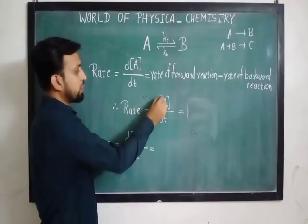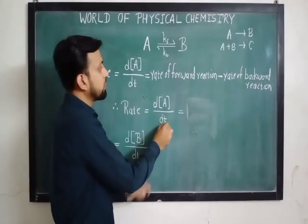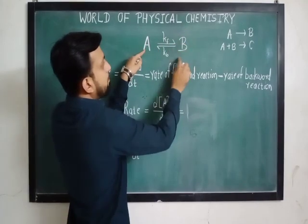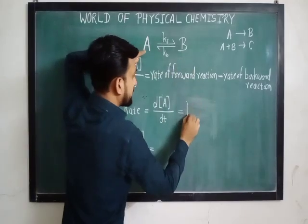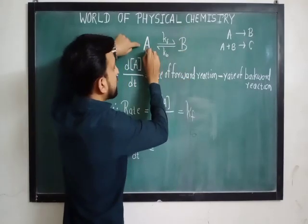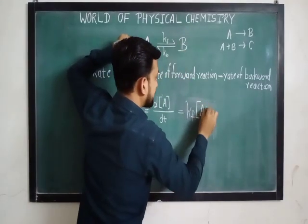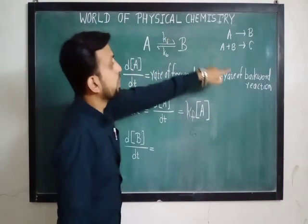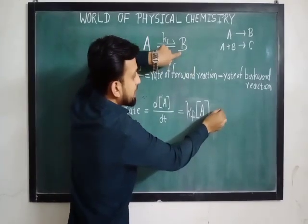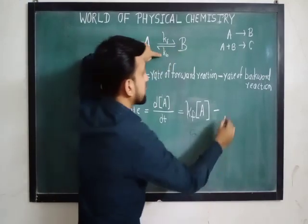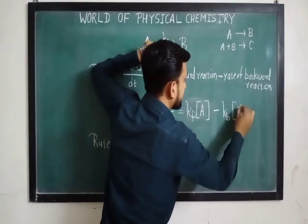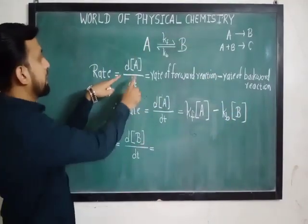Therefore, we write: rate equals d[A]/dt equals the rate of the forward reaction. In the forward reaction, B is formed, so we write K_F — the rate constant for the forward reaction — multiplied by the concentration of A, since formation of B depends on the concentration of A. For the backward reaction, B is disappearing, so we put a negative sign: minus K_B times the concentration of B. This is the rate law for A.